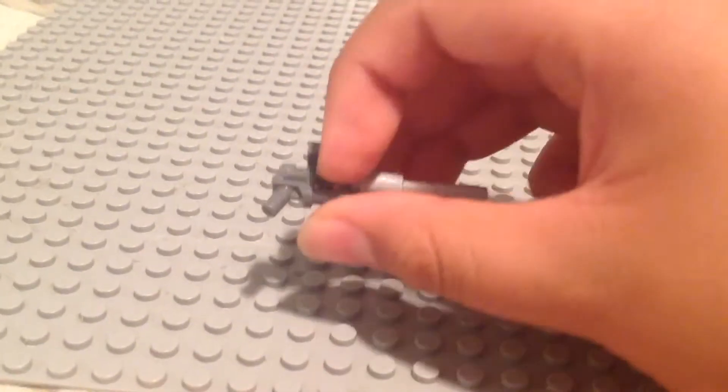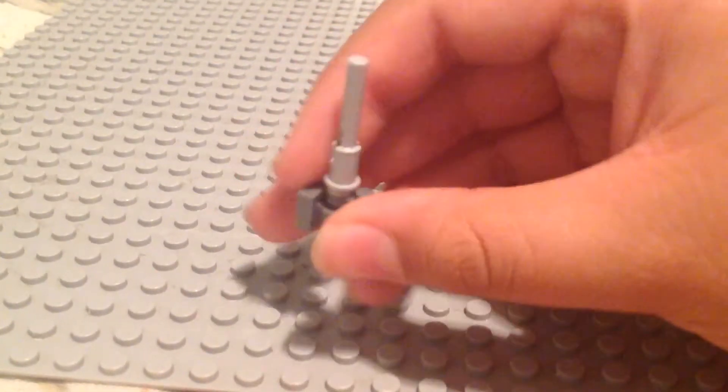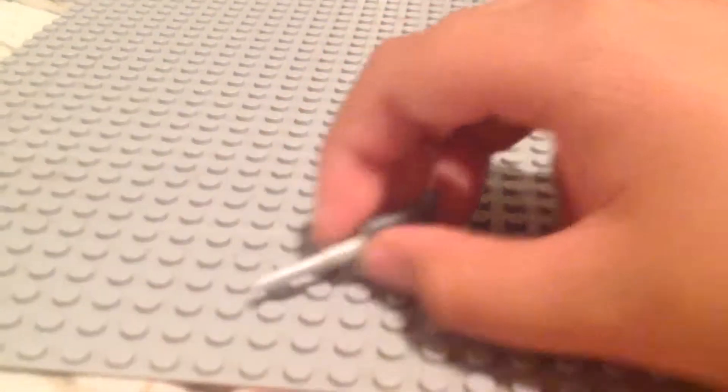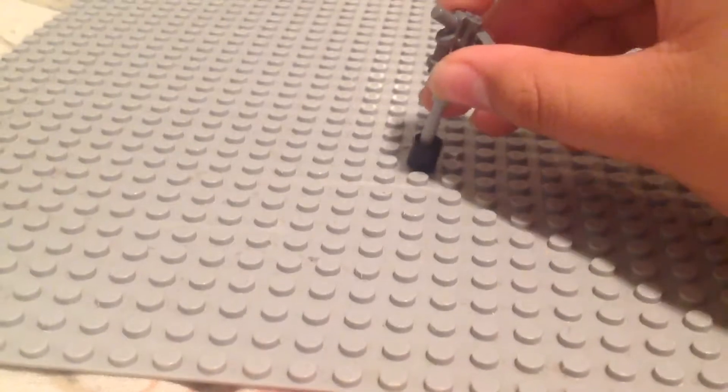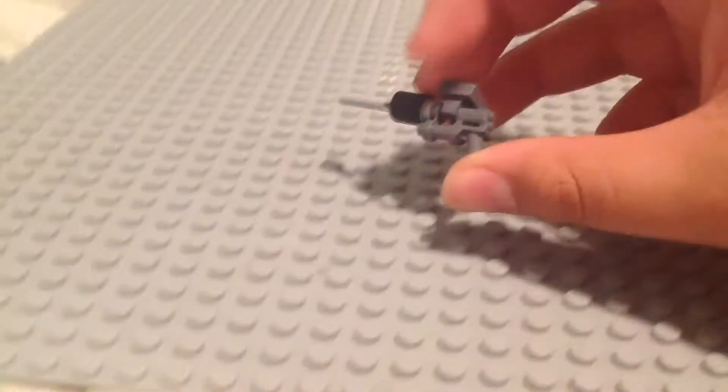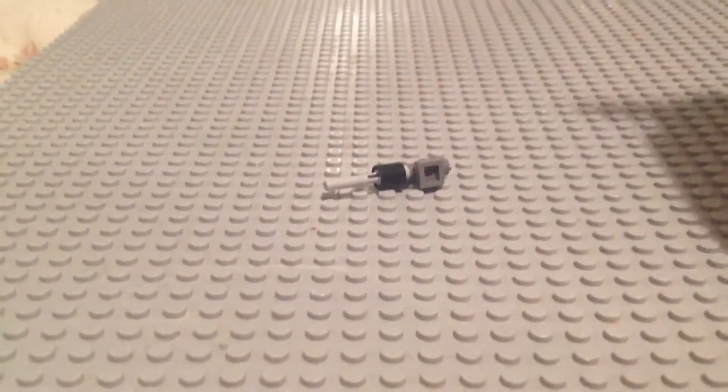Then you just take the Flick Fire Missile piece and place it on there like that. Now you just take your ring piece, push it up, and there you go. That is your first LEGO gun. It looks so cool on many things, and I bet you'll like it.